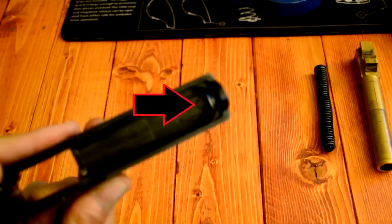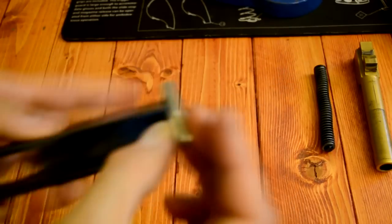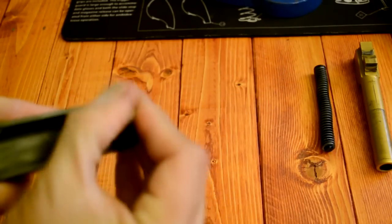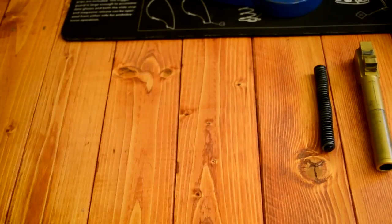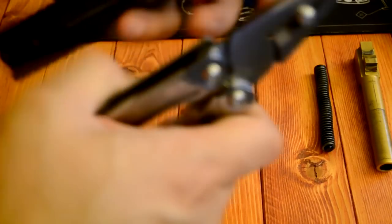You'll notice the sight screw is located here. Begin removing the front sight screw. If you have difficulty removing the screw, grab a pair of pliers to apply some additional torque.